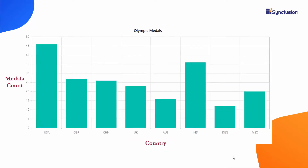Look at this column series chart, which displays the gold medals won by different countries in the Olympic Games. From this, we can conclude that text values can be displayed for each data point in the chart using the category axis. Now let me show you how to customize the category axis.